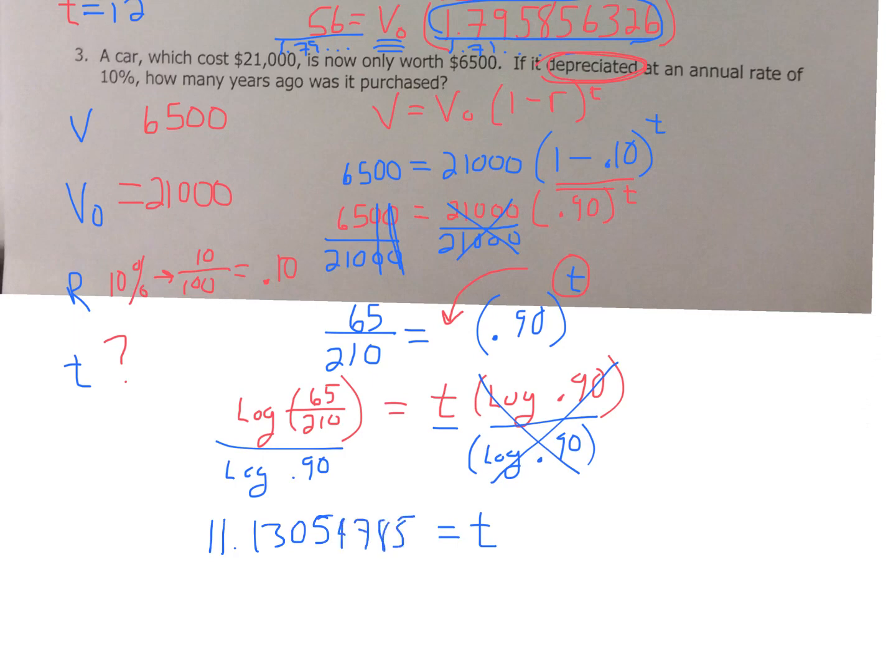Now, we're rounding to two decimal places, so that 0 says it stays. So in 11.13 years, this thing will depreciate to a value of $6,500.